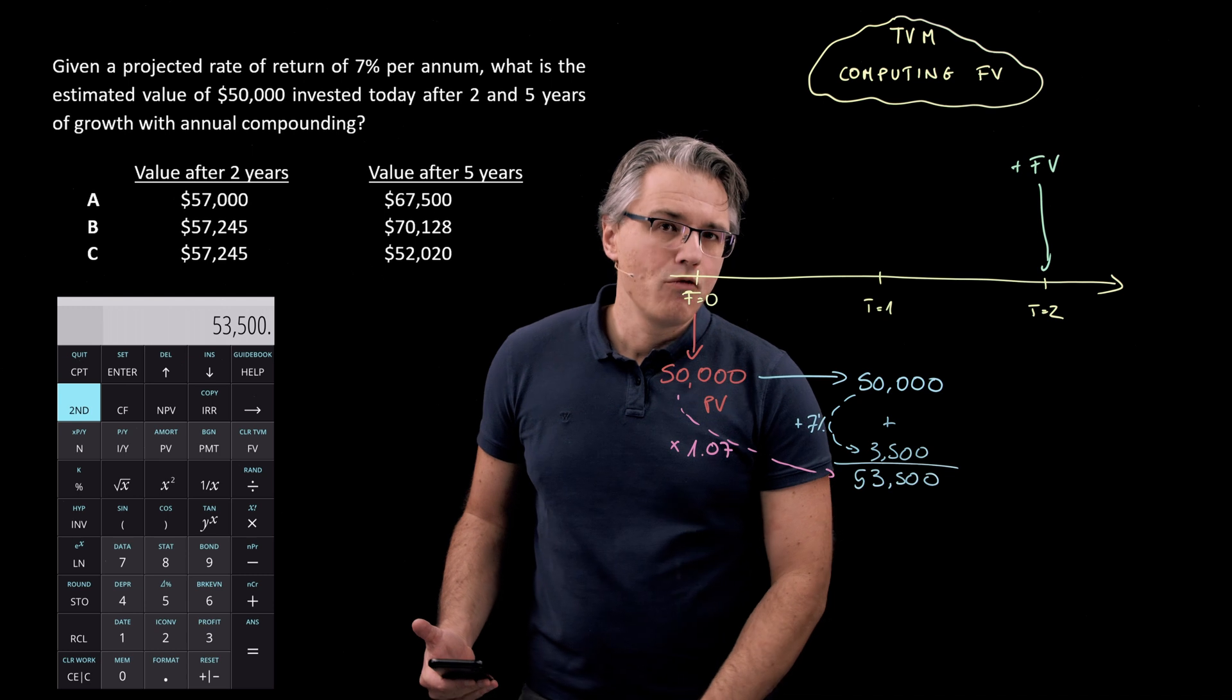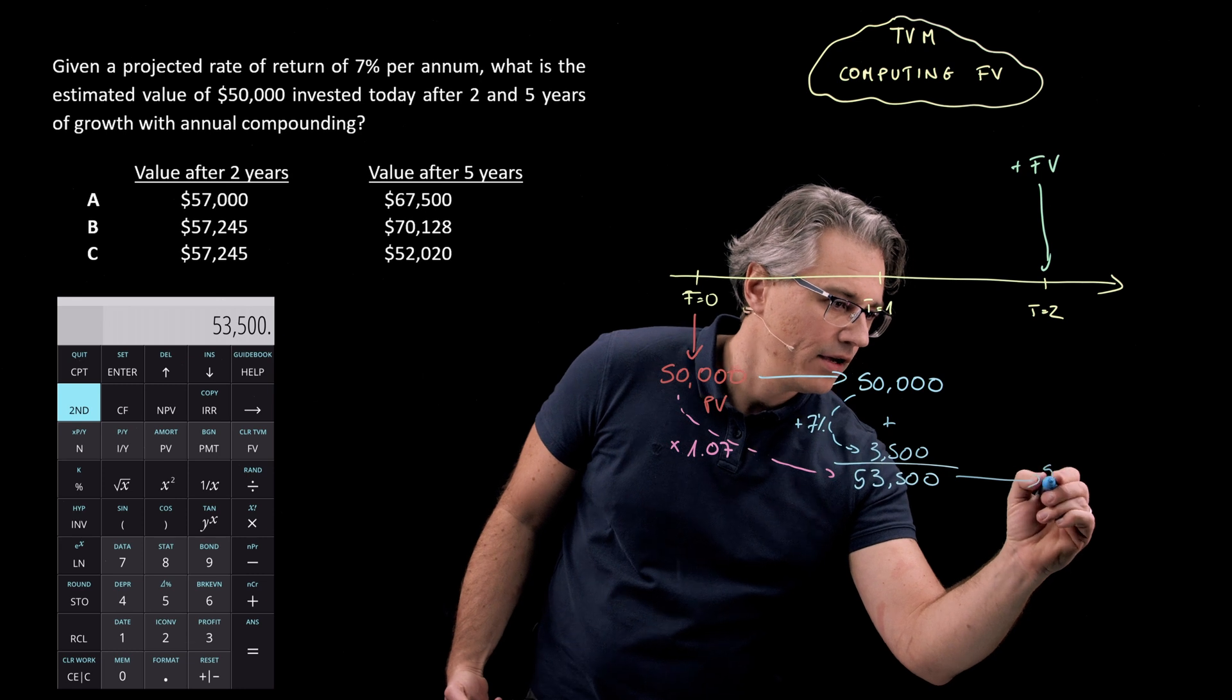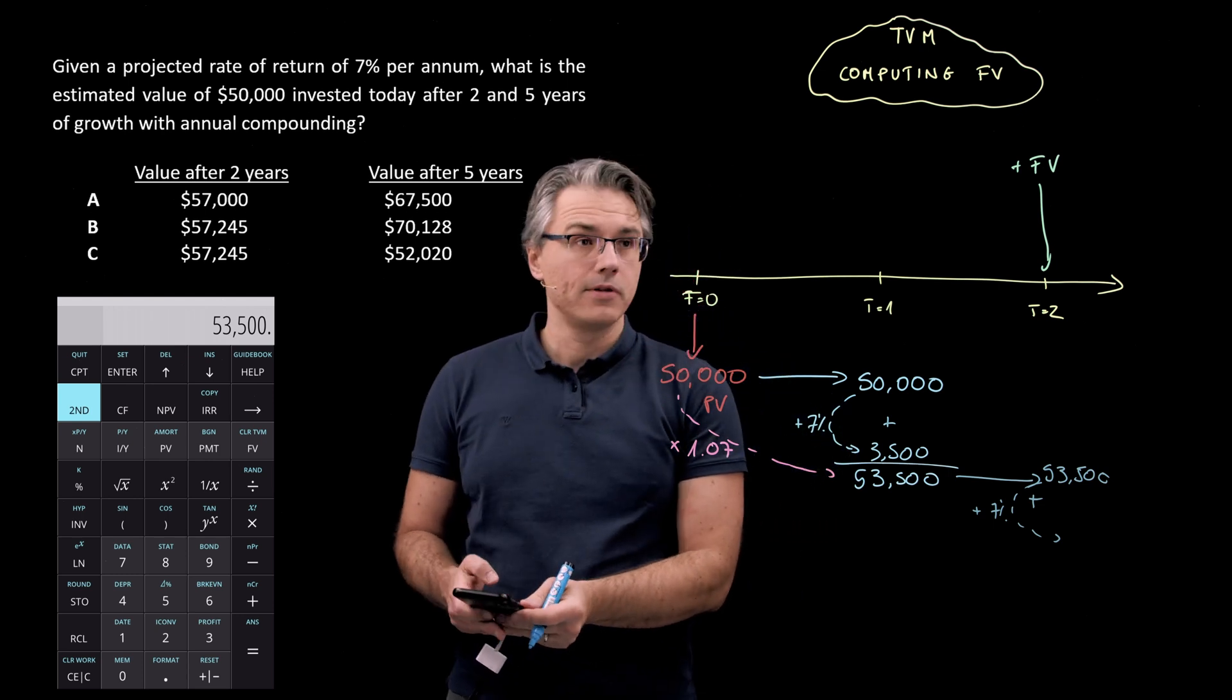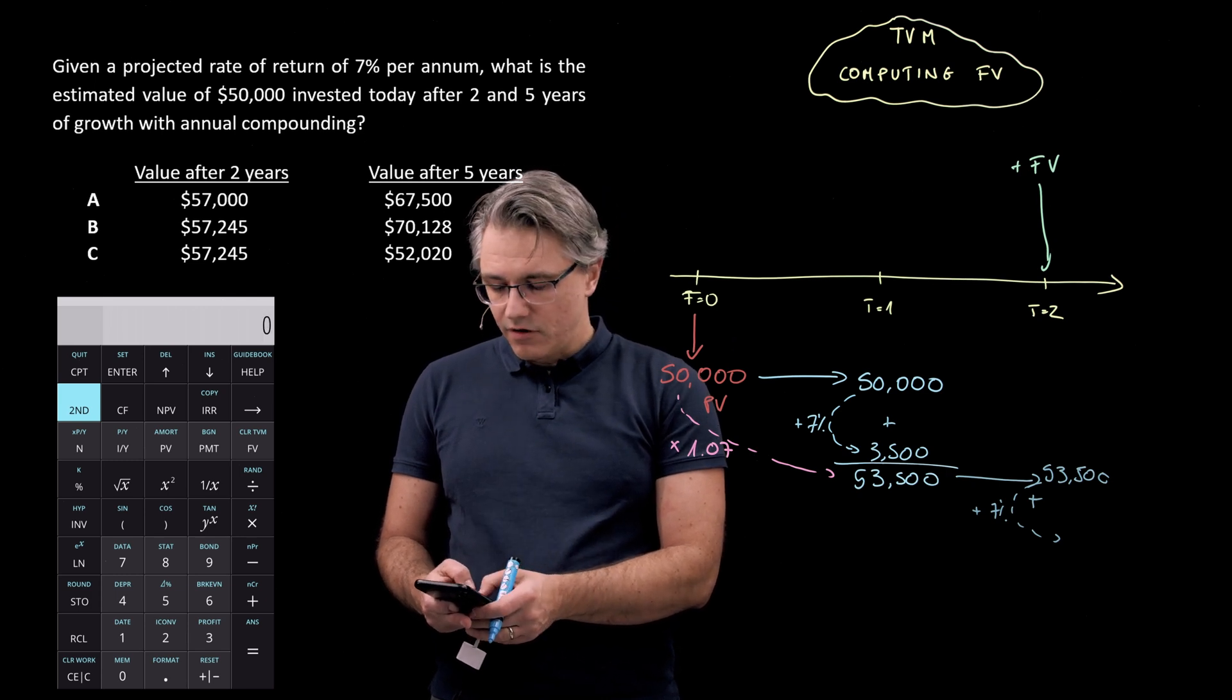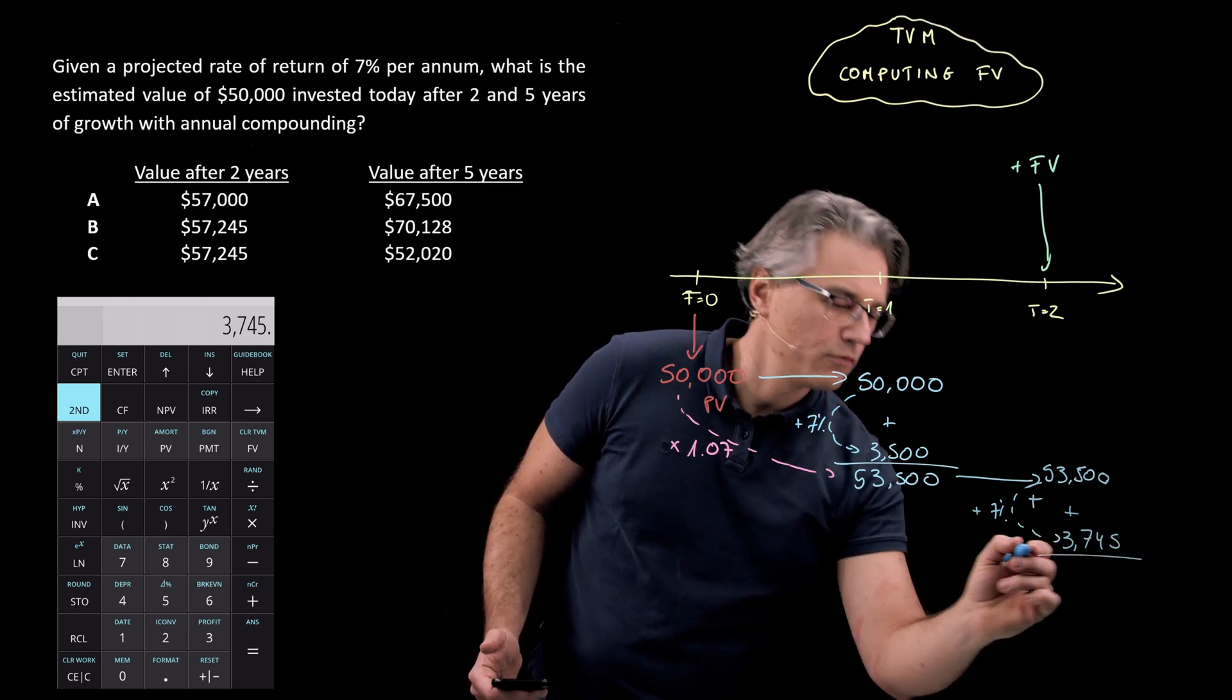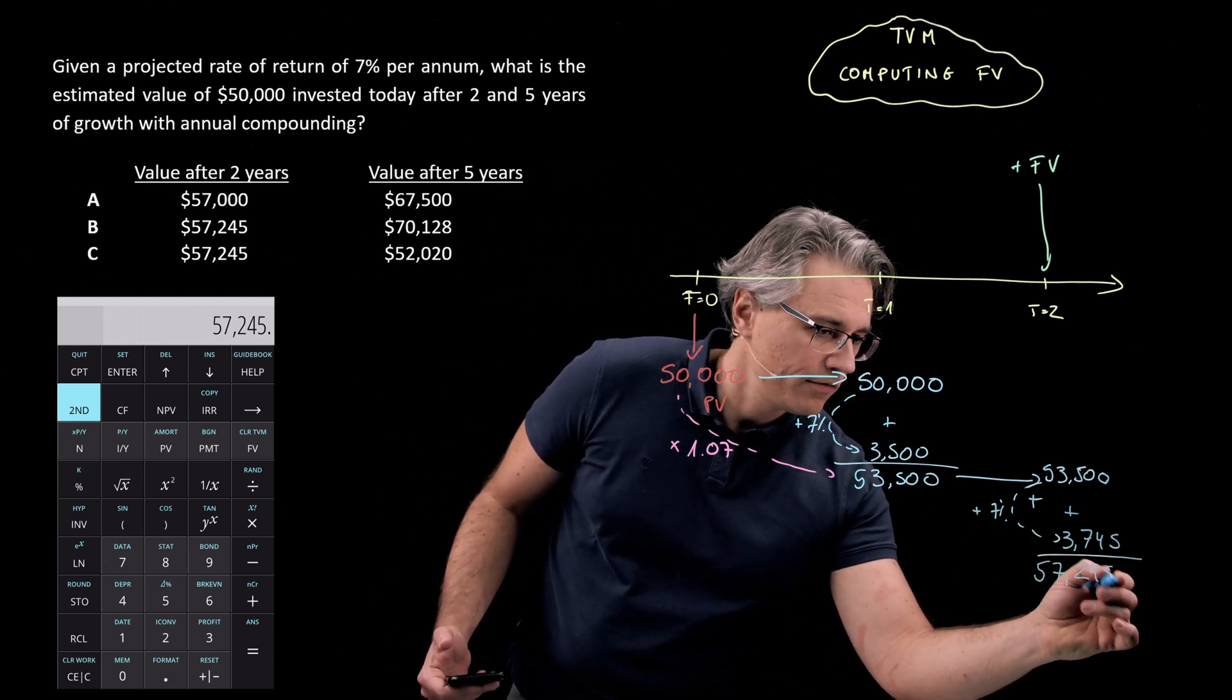And in the same way, we could repeat these actions and say, at the end of year two, we're still going to have 53,500. But on top of this, interest computed at 7%. So plus 7% interest, let's see what that gives on the calculator times 1.0. Well, I want to do 53,500 times 0.07. That's going to give us an extra 3,745 on top of what we already had at the end of the previous year. So 53,500. And I see a total of 57,245.